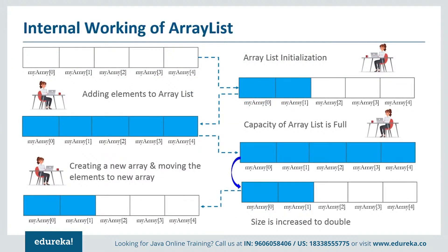Now let's move further and see the internal working of ArrayList. First, we create an empty array and then go on adding the elements. Once the size of the array is full — that is, if the size of the current elements is greater than the maximum size of the array — then we have to increase the size of the array. But the size of the array cannot be increased dynamically, so what happens internally is a new array is created and the old array is copied to the new array. By this, automatically the size will be doubled and increased, so you can go on adding elements as much as you require.